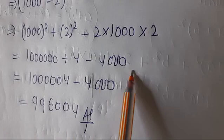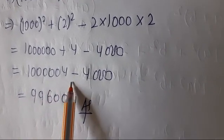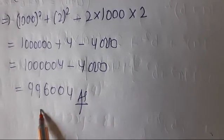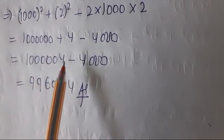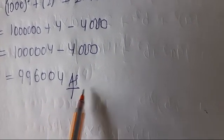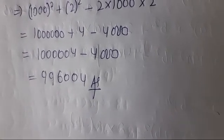1000000 + 4 - 4000 equals 1000004 - 4000 equals 996004. I hope you all understand, thank you.